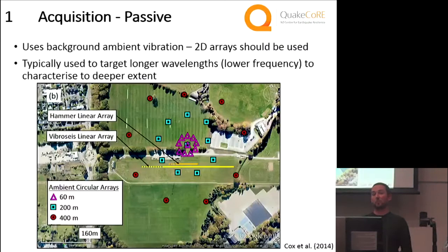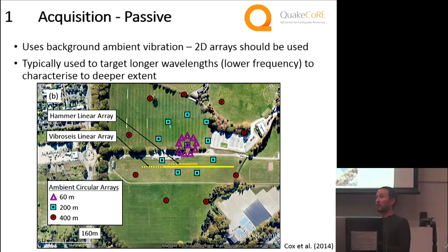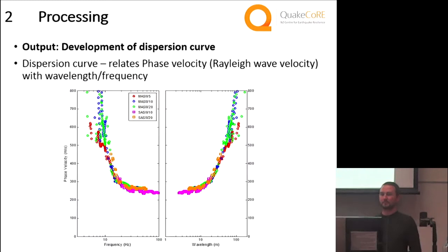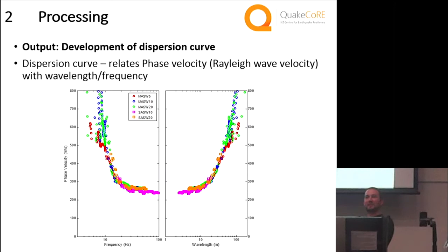For 2D arrays, here's an example from Christchurch where we did 60, 200 and 400-metre arrays. To profile the velocity to rock in Christchurch you'd need something like that — to be honest, you'd need a kilometre array depending on how far you are from the Port Hills. You pull all that data together using different methodologies and characterise what is called a dispersion curve — a representation of that average velocity as wavelength gets deeper — and that requires experience to process and clean the data.